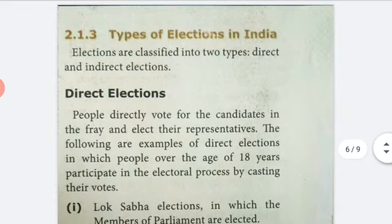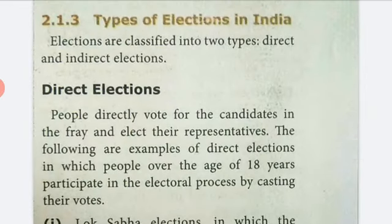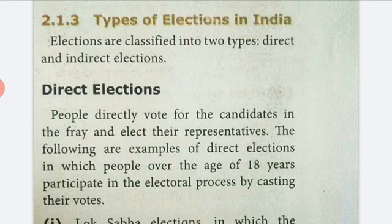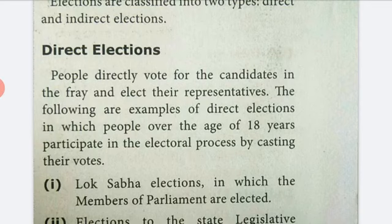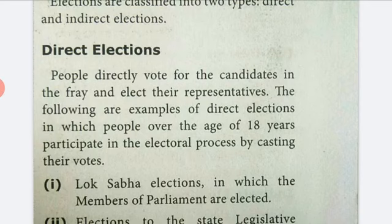Elections are classified into two types: one is direct elections and another one is indirect elections. In direct elections, people directly vote for the candidates and elect their representatives. The following are examples of direct elections in which people over the age of 18 years participate in the electoral process by casting their votes.